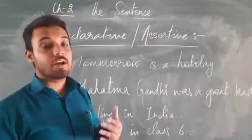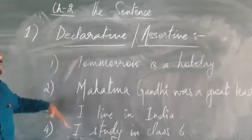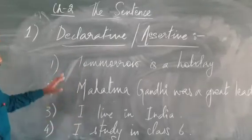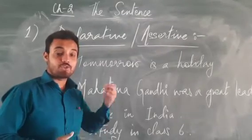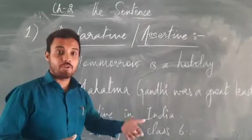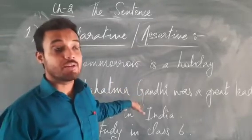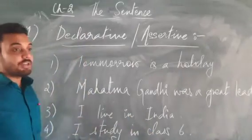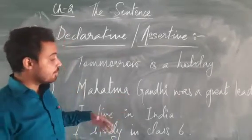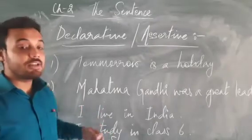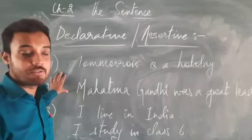Assertive sentences are those sentences which simply state something. Now the examples are already written here and we are going to see which one is declarative and which one is assertive. 'Tomorrow is a holiday' — I am declaring that tomorrow is a holiday, this is a fact, so it is declarative. 'Mahatma Gandhi was a great leader' — this is also a fact, so it will be a declarative sentence. 'I live in India', 'I study in class 6' — again declarative sentences. All these examples are declarative sentences.